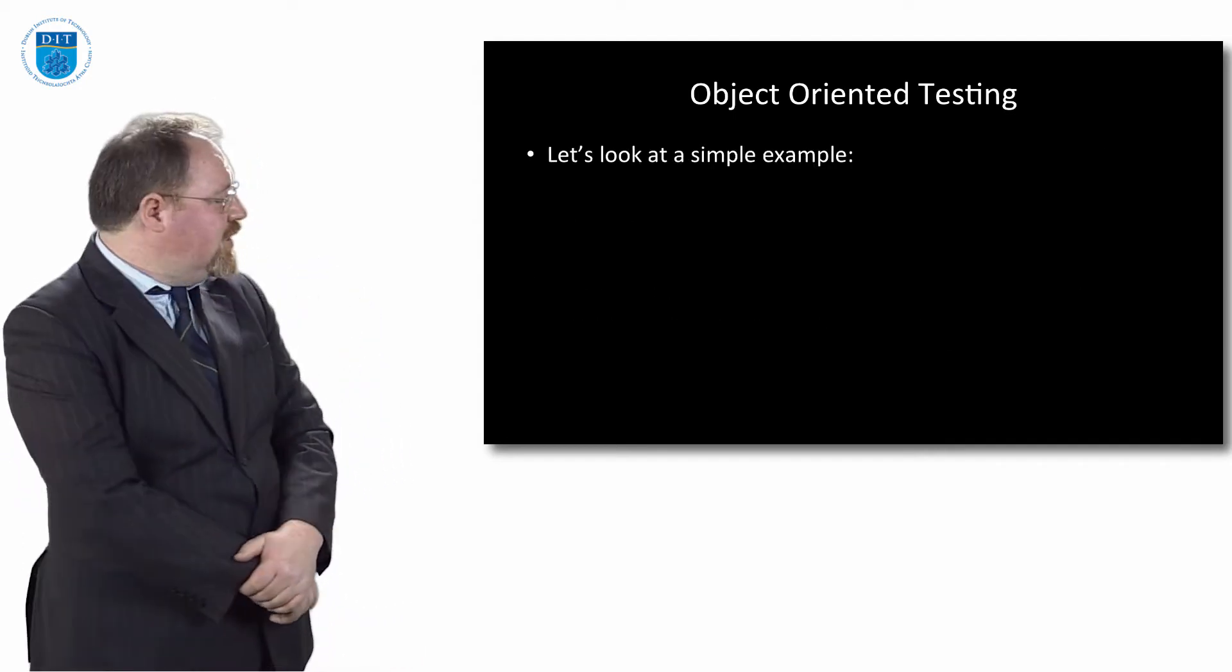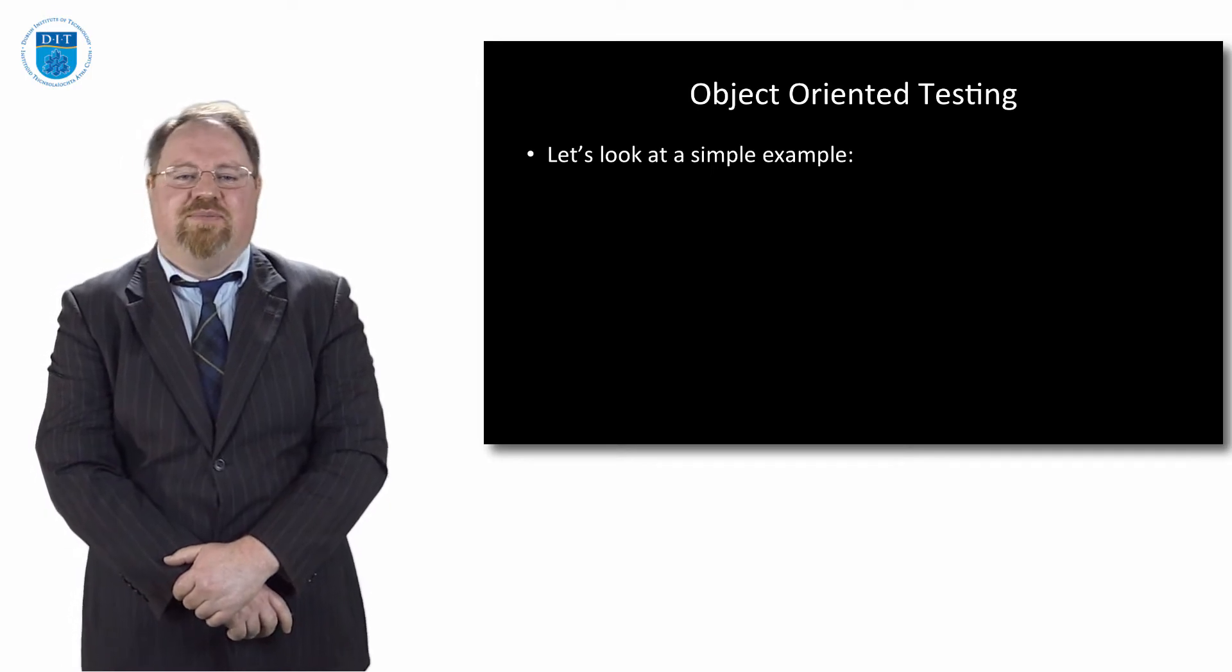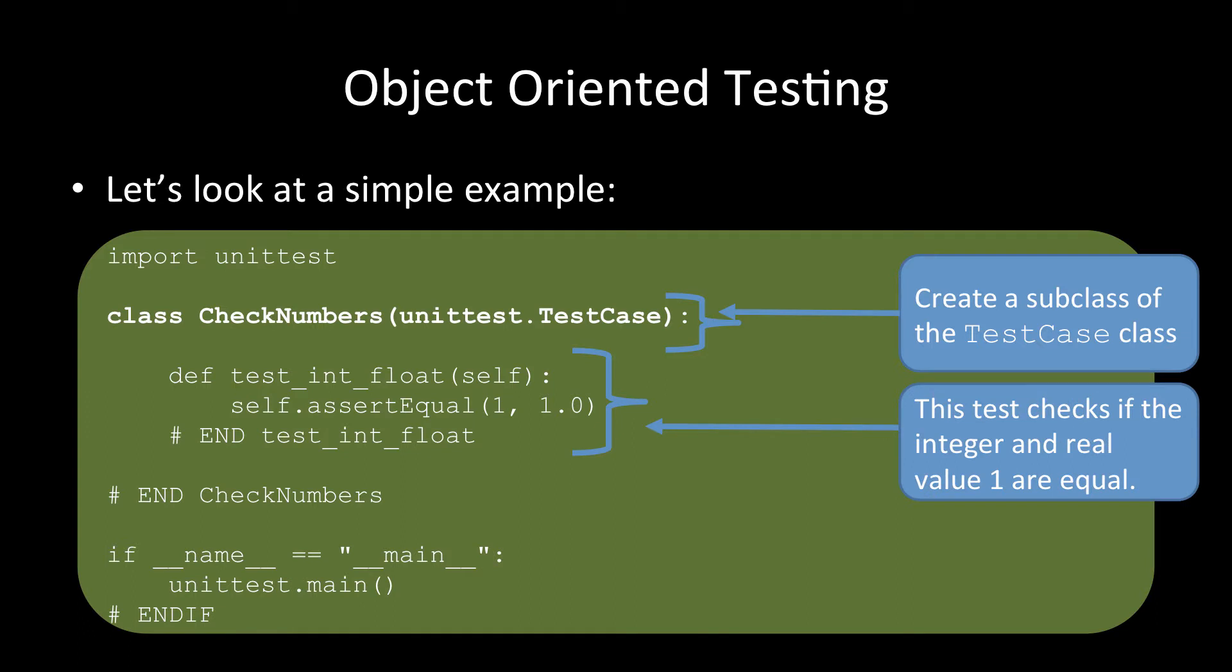Let's look at a very simple example to show whether or not the number one as a real number is the same value as the number one as an integer, which it is. So this is what our code looks like. The first line is to import unittest. That brings in the whole library. Then our next line is to create a class which is a subclass of TestCase and inherits all the methods and attributes of the TestCase class. Our class is called CheckNumbers. Then we def a method called test_int_float and the name has to start with test to help us identify it as a test method. What our code says is assertEqual 1 and 1.0, which checks if the integer and real value 1 are the same.